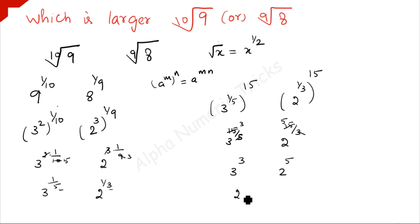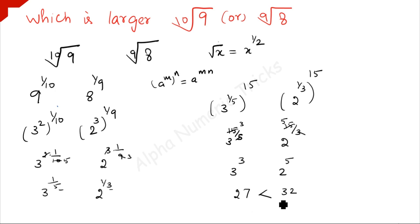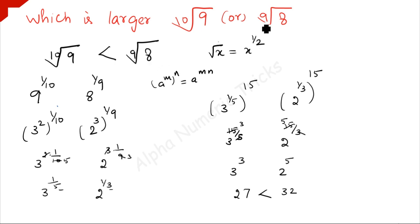Now, 3 to the power 3 is 27 and 2 to the power 5 is 32. Obviously 32 is greater than 27. So in our original problem, the 10th root of 9 is less than the 9th root of 8. Therefore, the 9th root of 8 is greater.